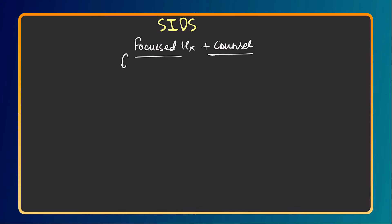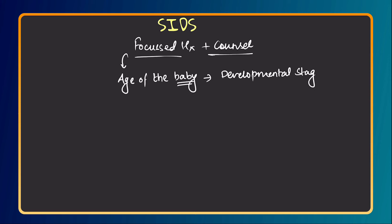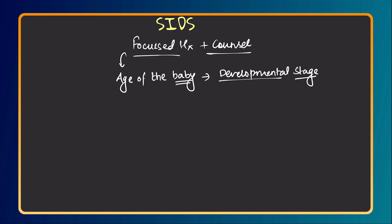Start by asking about the age of the baby. SIDS is more likely to happen between two to four months, so asking the age gives you an idea of the developmental stage. The reason it happens between two to four months is that this is when babies start turning from their back to their front, which is hypothesized to be responsible for suffocation, although this has not been proven.